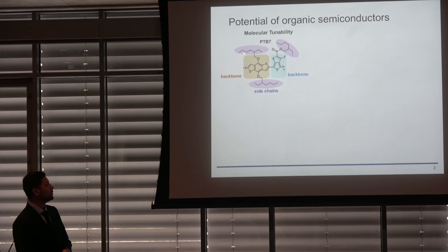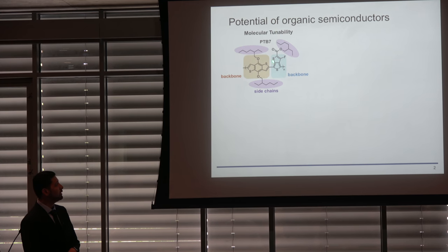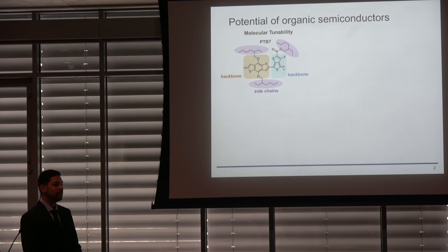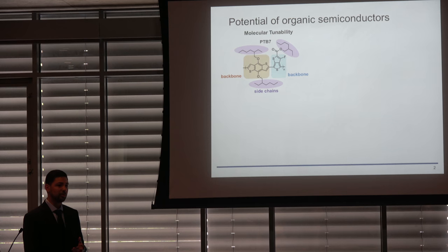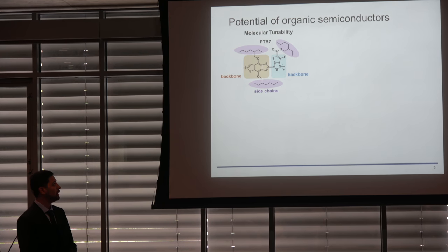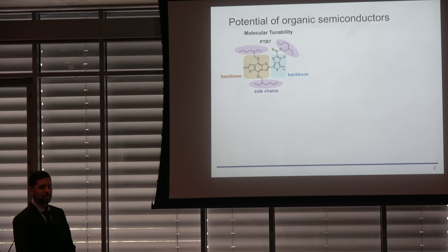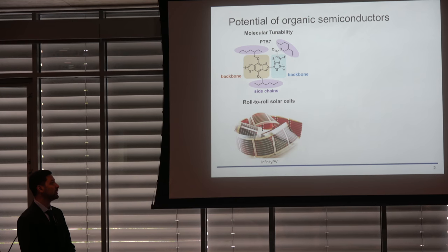We can also tune the side chains that render these materials soluble in organic solvents. Side chains can be linear alkyl, branched alkyl, ethylene oxide, or other types. We can create block copolymers to co-optimize properties from two different polymeric materials, and vary their molecular weight and dispersity. Together, tuning these structures can render properties such as mechanical flexibility.